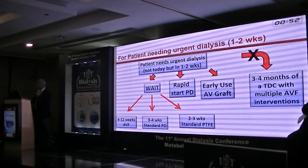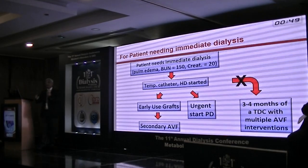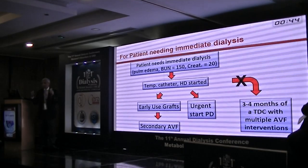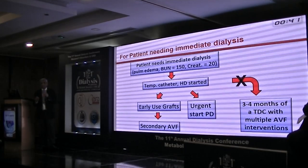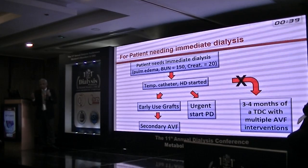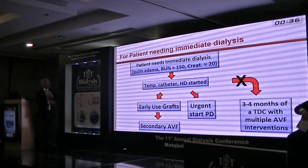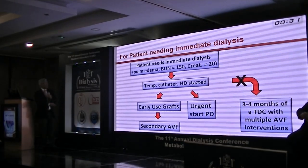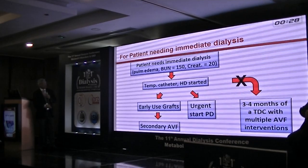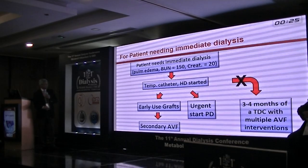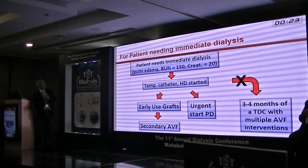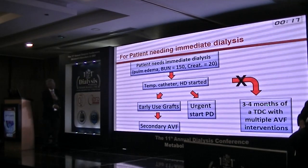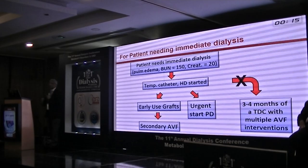What about the patient who needs dialysis right now? For example, BUN of 200, creatinine of 20, and pulmonary edema — you must act immediately. You can start a temporary catheter, but right away also pursue an early-use graft or urgently start PD. Later, once the graft fails, you can transition to an AV fistula, though hopefully the graft will last a long time. This approach allows you to avoid three to four months of catheter use.